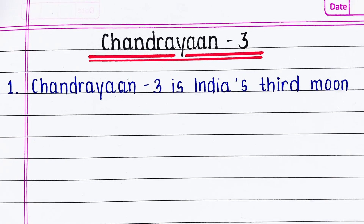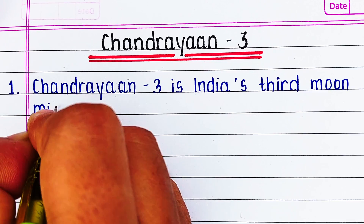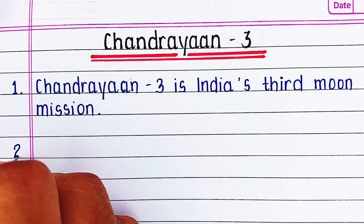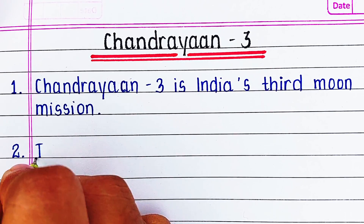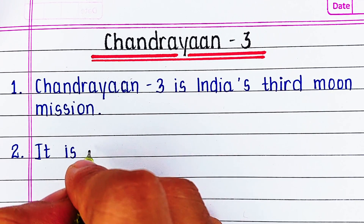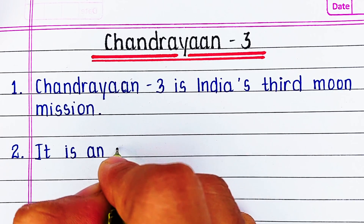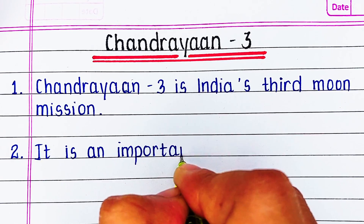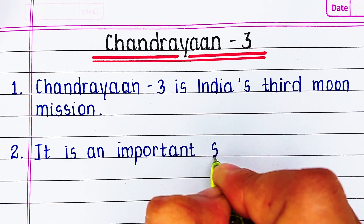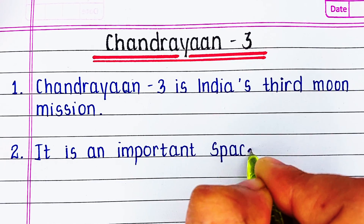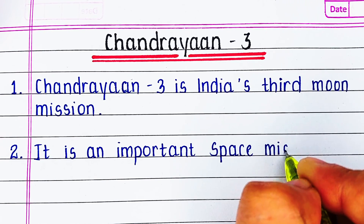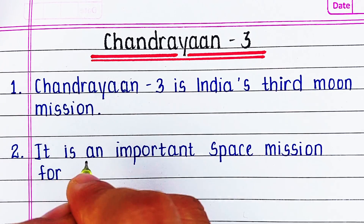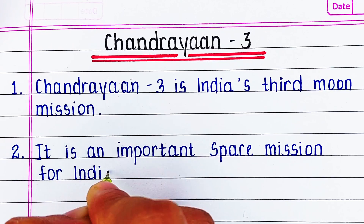First line is: Chandrayaan 3 is India's third moon mission. Second line is: it is an important space mission for India.